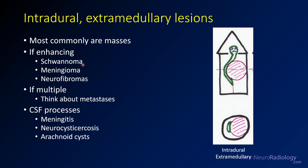A lot of these enhancing masses are schwannomas and meningiomas. Neurofibromas can have more variable enhancement. If you see multiple lesions, metastatic disease is what you really want to think about. Anything that diffusely affects the CSF can affect the intradural extramedullary space — that includes things like meningitis, neurocysticercosis, arachnoid cysts, and similar conditions. So any diffuse CSF process is intradural and extramedullary.